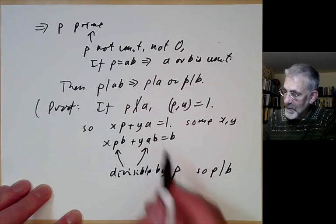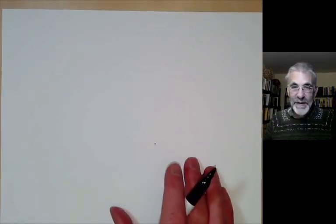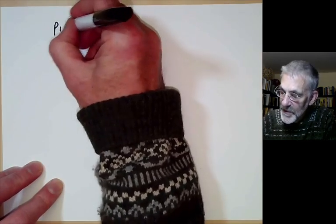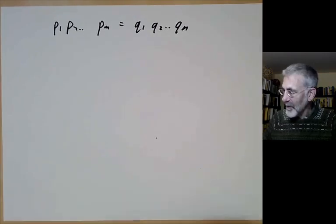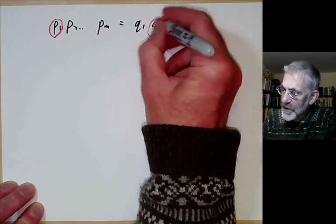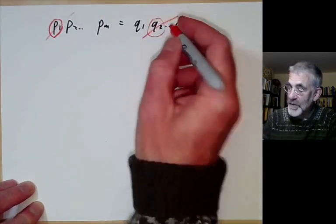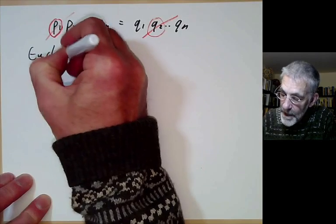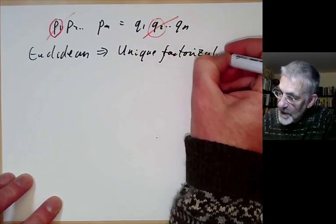Note this is divisible by p because ab = p times something. This easily implies that anything can be written as a product of primes. The main point is: if p₁p₂···pₘ = q₁q₂···qₙ with all primes, then p₁ must divide some qᵢ, say q₂. Since q₂ is also prime, p₁ = q₂. Cross off p₁ and q₂ and continue pairing off the primes. So a Euclidean ring implies unique factorization, just as it does for the integers.